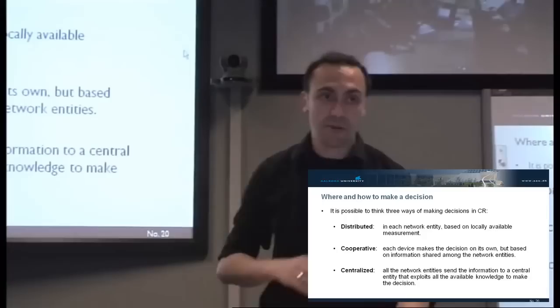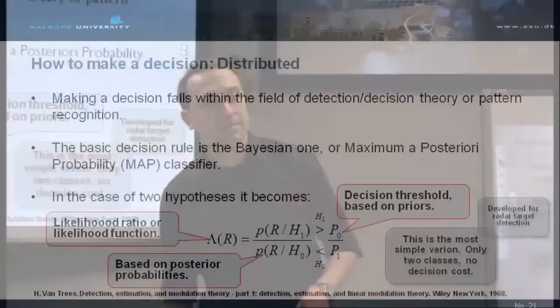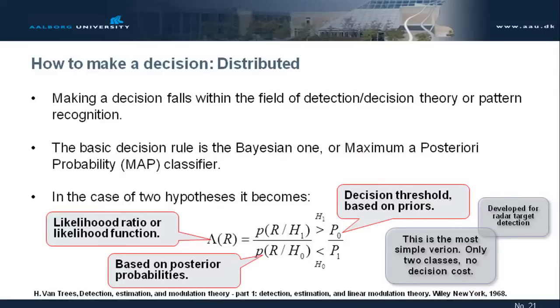I will have a look about all of them. Distributed decision. The simplest classification process is the Bayesian one. Maximum a posteriori probability classifier. That's the oldest one. Again, we go back to the end of the 60s with this beautiful book, which is still used in didactics, which is the Van Trees.